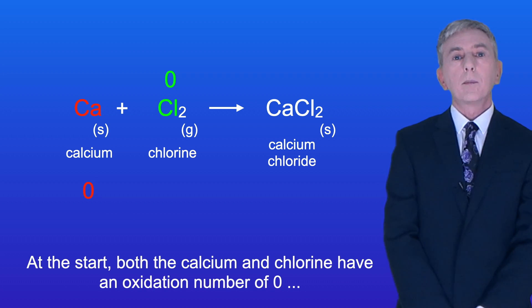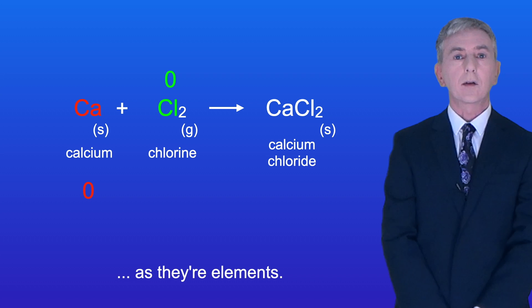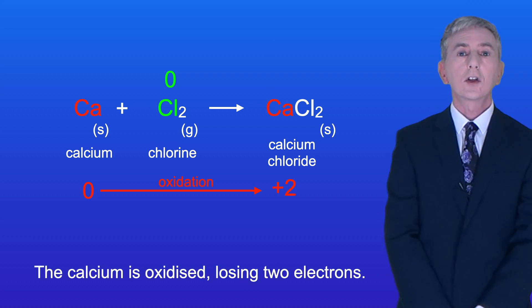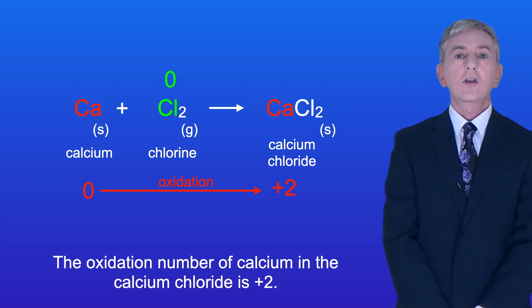Okay at the start both the calcium and chlorine have an oxidation number of zero as they're elements. The calcium is oxidized losing two electrons so the oxidation number of calcium in the calcium chloride is +2.